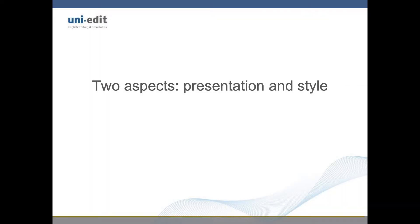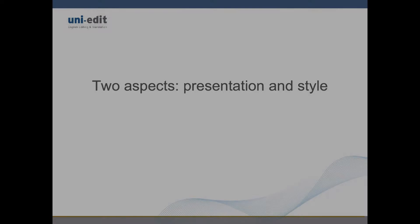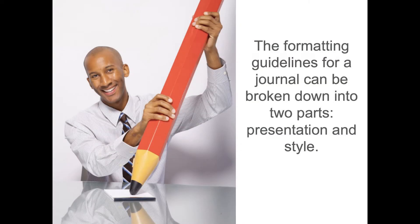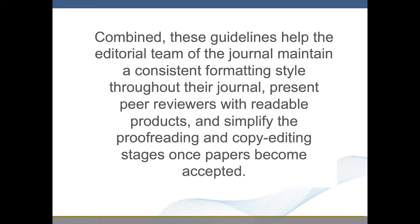The formatting guidelines for a journal can be broken down into two parts: presentation and style. Combined, these guidelines help the editorial team of the journal maintain a consistent formatting style throughout their journal, present peer reviewers with readable products, and simplify the proofreading and copy editing stages once papers become accepted.